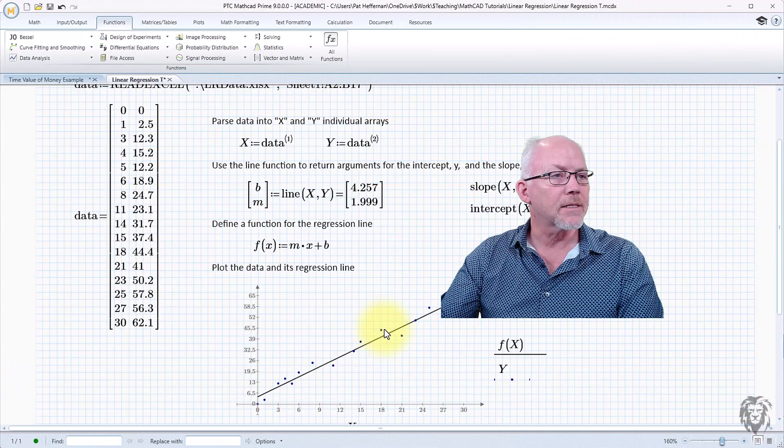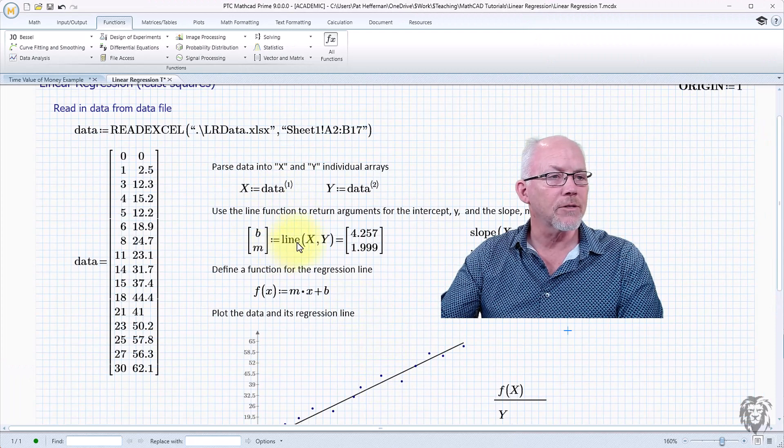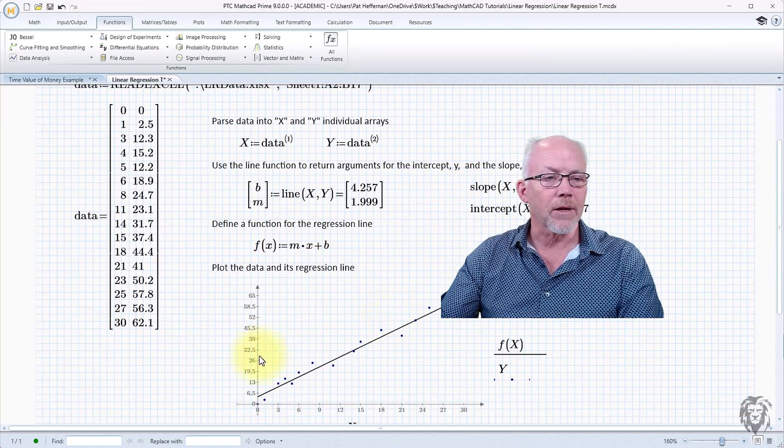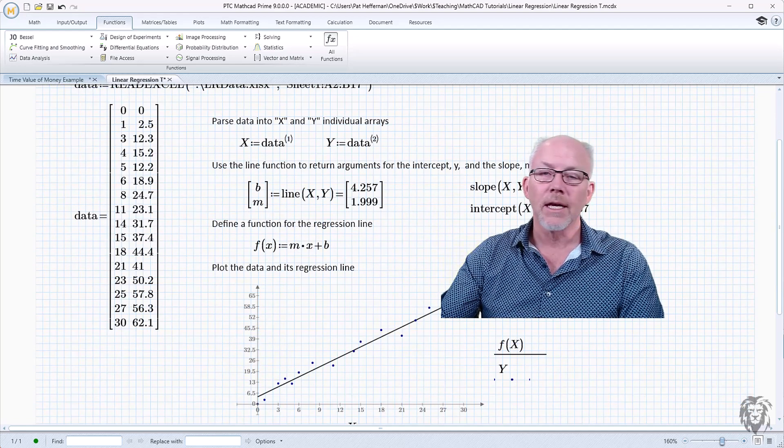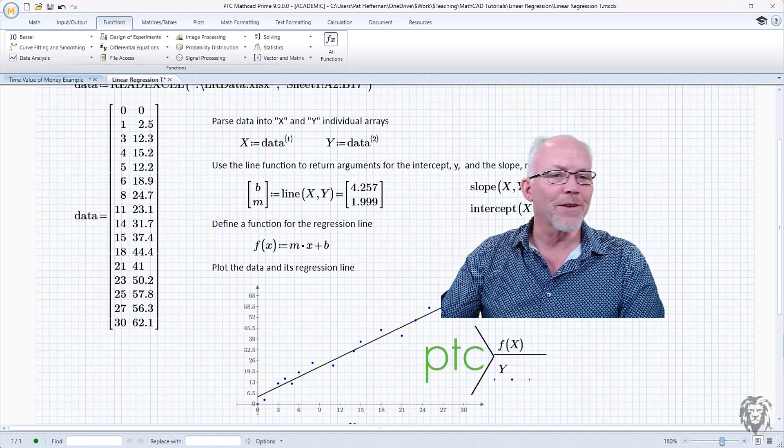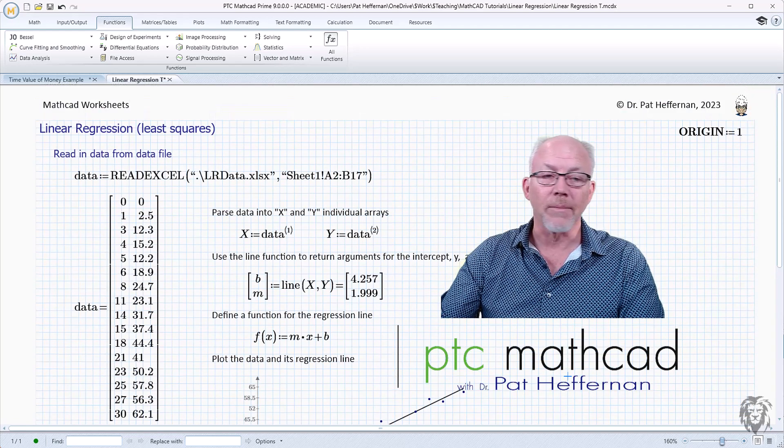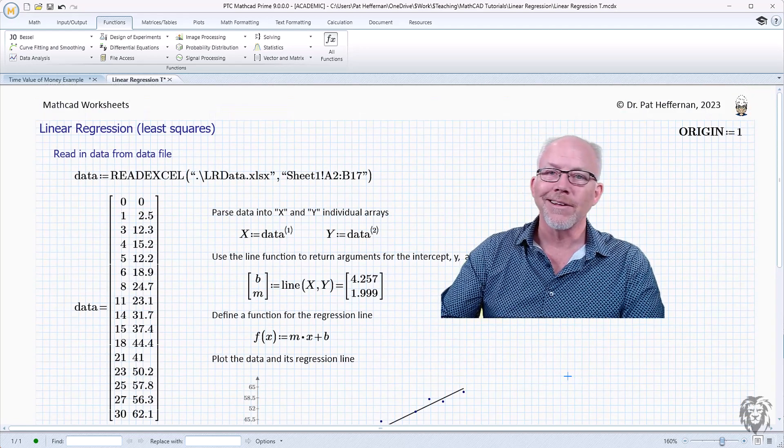And that's it. Simple linear regression. So easy use of the line function. Alternatively, the slope and intercept—throw it into an equation, you can plot it with your data points, and away you go. So hopefully that was useful. We'll have to look at some more of the data manipulation as we move on. Thanks very much.